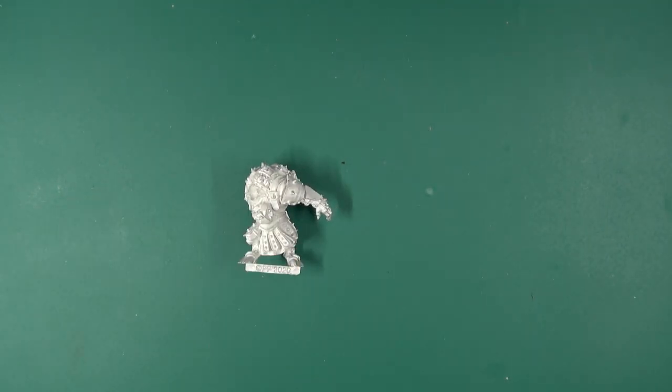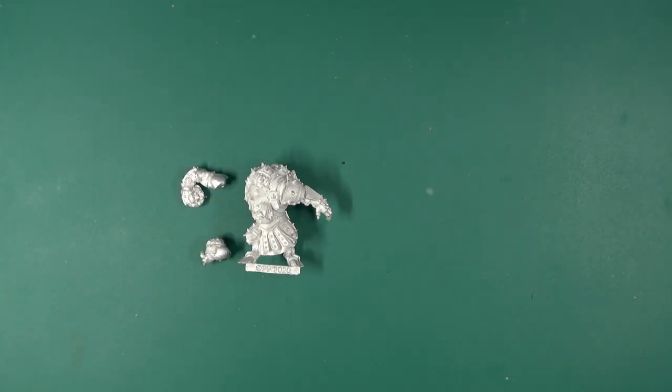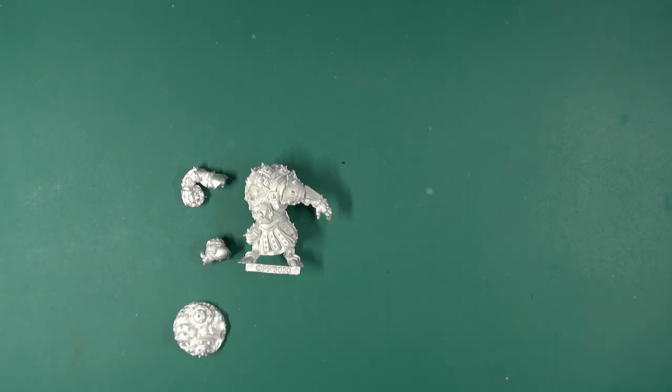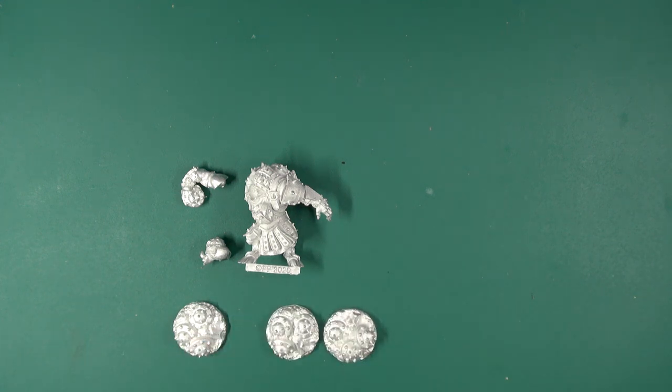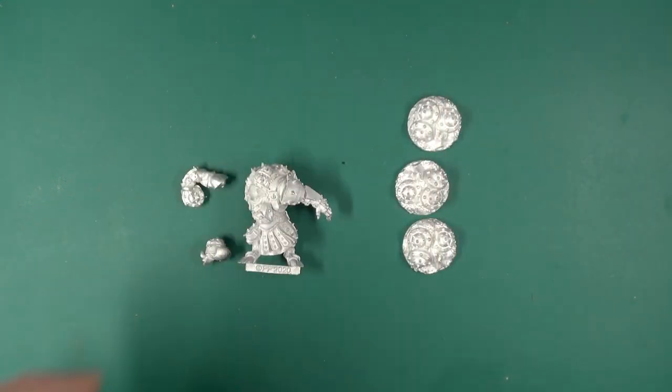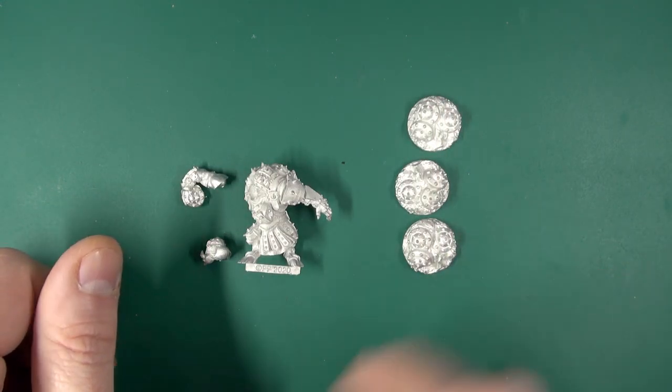We get a body, head, arm, a round lip base, and then three mine tokens. All three of the tokens are the same.